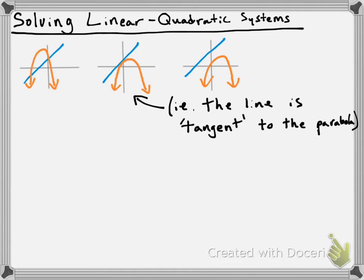Let's take a look at a specific problem. We're going to solve the following linear quadratic system. We have y equals 2x squared minus x plus 1 — that's our quadratic, that's our parabola. We need a line as well, so let's say y equals 4x plus 4. These two equations form our linear quadratic system — a line and a parabola.